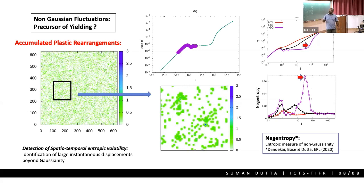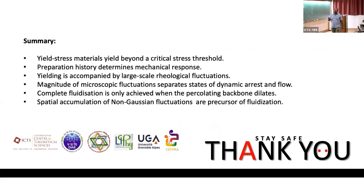With this, I'm going to summarize the main points that I have talked on. So we talked about these yield stress materials that they yield beyond the critical threshold. And this fluidation process depends upon the preparation history and their material origin. And yielding basically comes with the large scale geological fluctuations, which are mostly non gaussian in nature. And that non gaussian fluctuation dilates the percolating backbone, which leads to the complete fluidation. With this, I'm going to stop. Thank you for the wonderful talk.